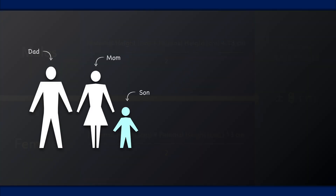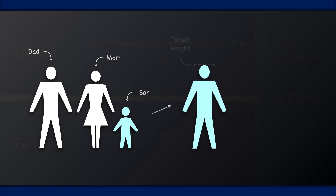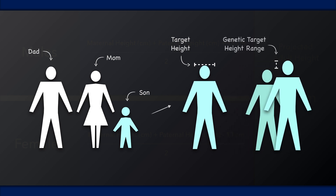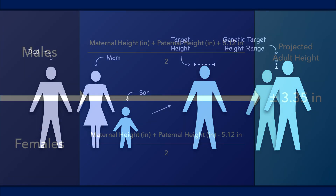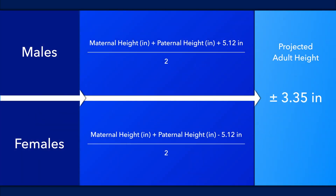It is this genetic target height range that is most useful. While not all siblings of the same sex reach the same height, their adult height usually falls within this range. Note that the calculation may not be as accurate when a parent is unusually short or tall. It is also not applicable when either fetal or postnatal growth has been permanently affected due to an illness or condition. The mid-parental height can similarly be calculated in inches.